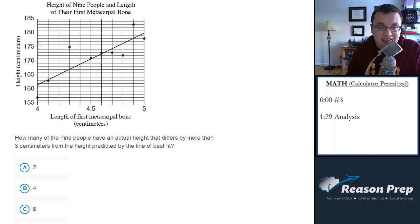Well, let's look at this one for example. This person has a height of 175 and a length of the metacarpal bone of 4.3, and yet according to the line, they should have a height of 167, but they have a height of 175, which is bigger than three, so that's one point.